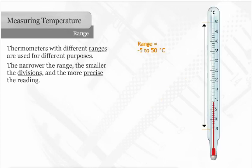Negative 5 to 50 degrees Celsius thermometers are used for environmental tasks, such as recording air and soil temperatures.